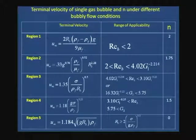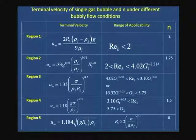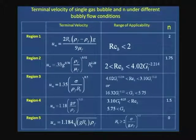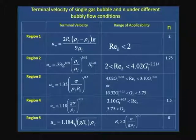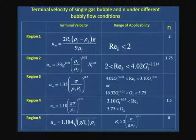For regions 1, 2, and 3, to find u_∞ you need to know r_b — the equivalent bubble radius, i.e., the radius of a sphere having the same volume as the bubble. So we next need to find different methods of determining the equivalent bubble radius.